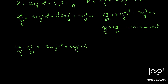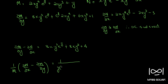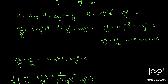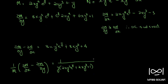Rule 5 applies here. For Rule 5, we use 1/M times (∂N/∂x minus ∂M/∂y). That becomes 1 over — taking y common from M, which gives 2xy³eʸ plus 2xy² plus 1 — into this difference, from which we take 4 common: so 4 times (2xy³eʸ plus 2xy² plus 1).